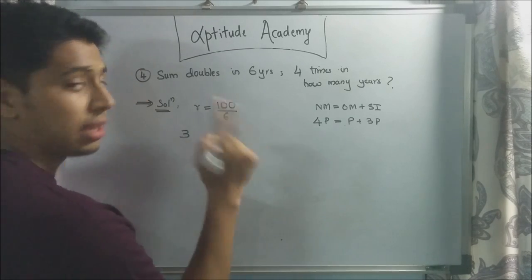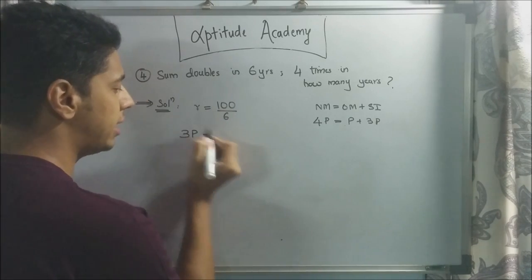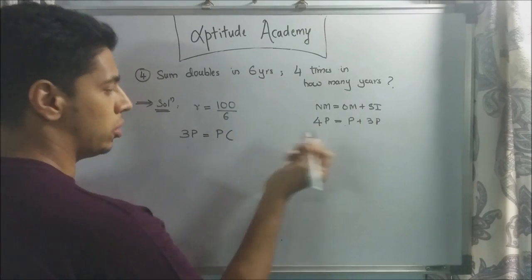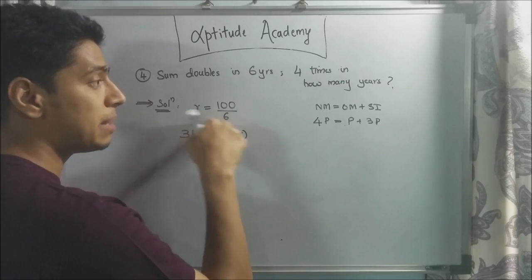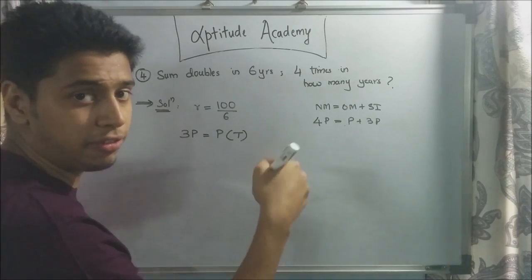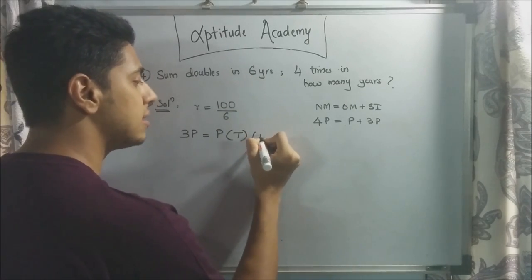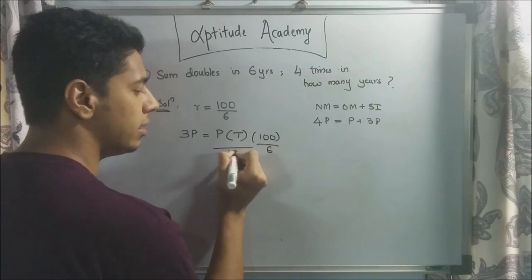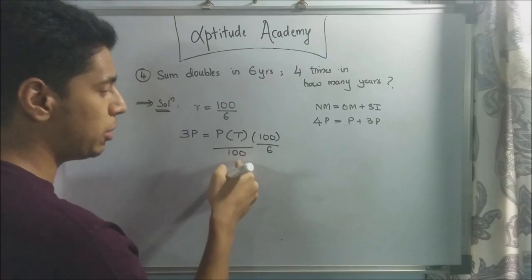We rewrite the SI formula. 3P. It's your SI. Is equal to PTR upon 100. Principle is always P. Time? We don't know. We have to find out time. We will substitute R here because we didn't know R in the first equation. R is 100/6 divided by 100. PTR upon 100. 100 and 100 gets cancelled.